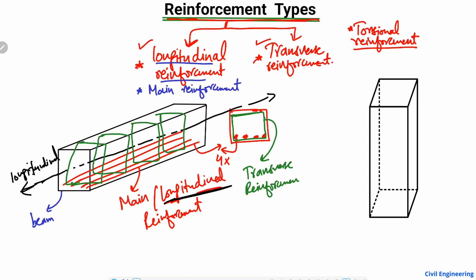They are called transverse reinforcement because 'transverse' means perpendicular — these reinforcements are provided perpendicular to the direction of the longitudinal reinforcement. That's why they are known as the transverse reinforcement, and these reinforcements are also known as shear reinforcement.